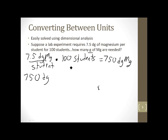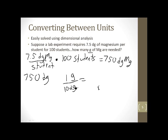Here's a very important phrase: 'what you want over what you got.' I have 750 decigrams and I want grams — so it's grams over decigrams. There are 10 decigrams in one gram, so I put 1 gram over 10 decigrams. When I do my math, decigrams cancel, and I get 750 divided by 10, which is 75 grams.